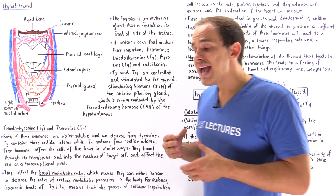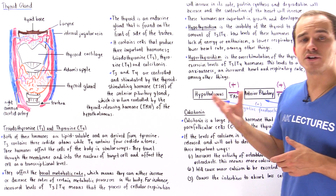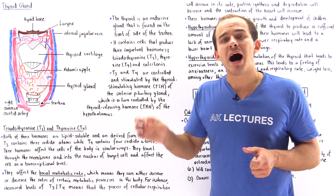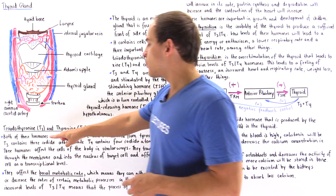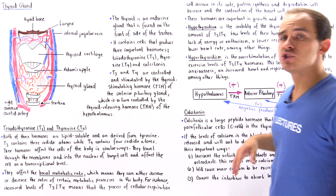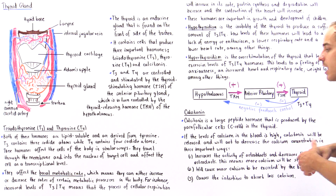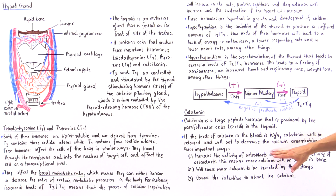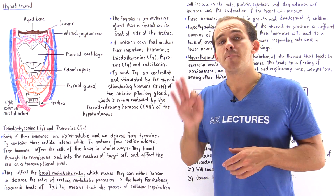Unlike T3 and T4, calcitonin is a peptide hormone — a large peptide — meaning it is water soluble. It can easily dissolve and travel inside our blood, and it binds onto receptor proteins on the plasma membrane of the target cell. While T3 and T4 release is controlled by the hypothalamus and anterior pituitary gland, calcitonin is controlled by the levels of calcium in the blood. If blood calcium is very high, calcitonin will be released by the thyroid gland.